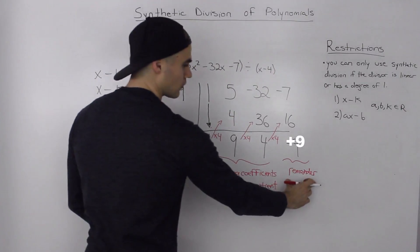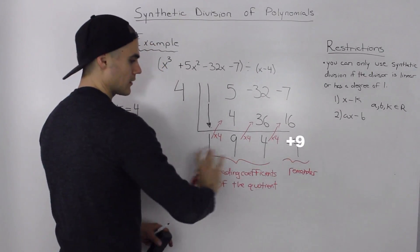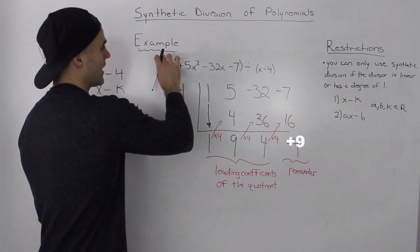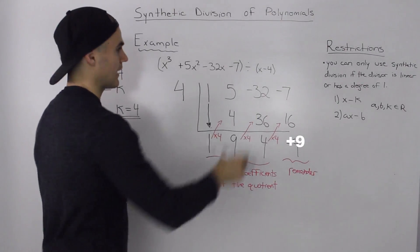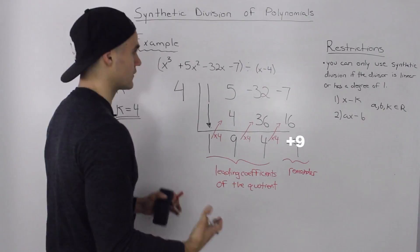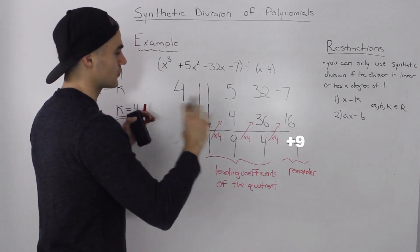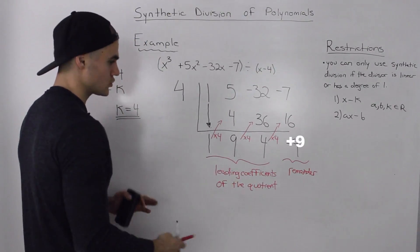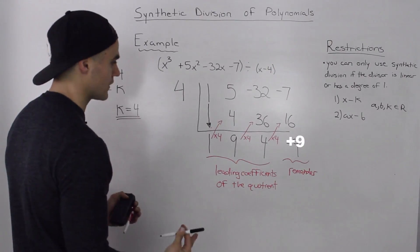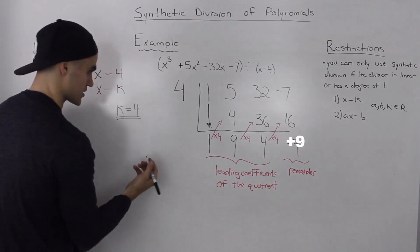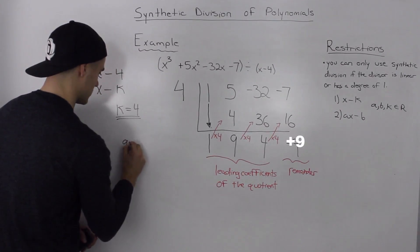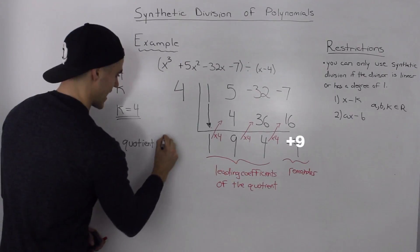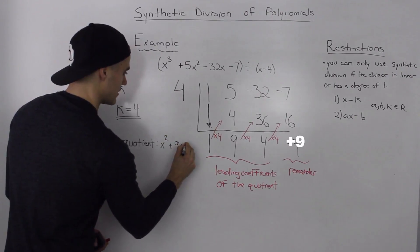Remember, in synthetic division the remainder will always be a constant, and the remaining numbers — however many there are — represent the leading coefficients of the quotient. Since we had a cubic, or a degree of 3 for the dividend, and the divisor had a degree of 1, the quotient is going to have a degree of 2. The degree of the quotient is always the difference between the degree of the dividend and the divisor. So our quotient is a quadratic: X squared plus 9X plus 4.